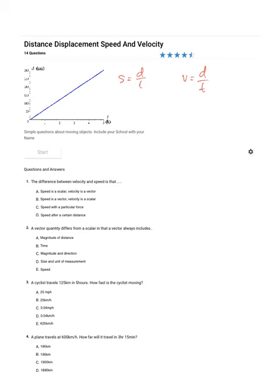If you prefer the little triangles to help you out, you can use this instead. So S is equal to D on T, and V is equal to D on T. If you're using the triangles, you cover up the variable that you're interested in, then you complete the operation that is remaining in the triangle.